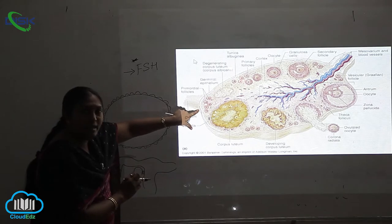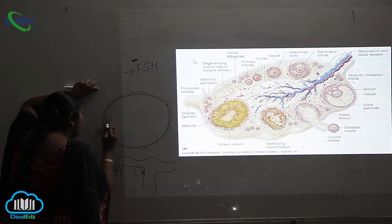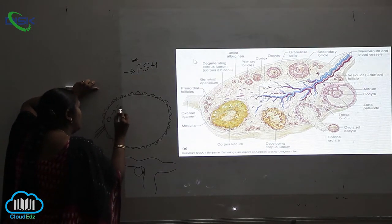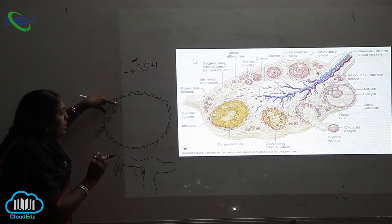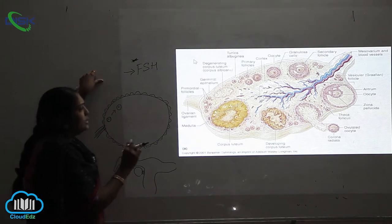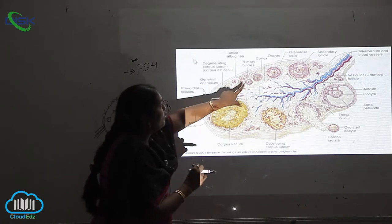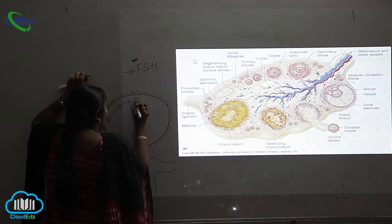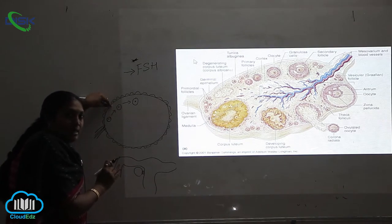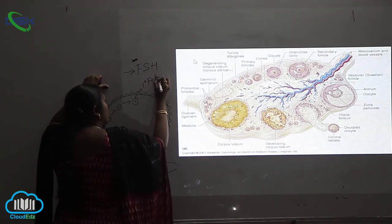Inside the ovary you can see primordial follicles — these are single-celled structures with one nucleus. These primordial follicles then develop into the next level, called primary follicles. So primordial follicles give rise to primary follicles.